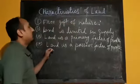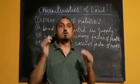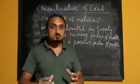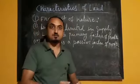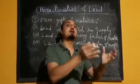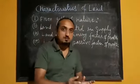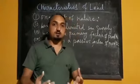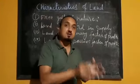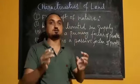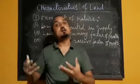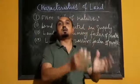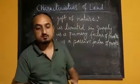The next characteristic: land is a passive factor of production. Why is it called a passive factor of production? Land is passive because land cannot produce by itself. In order to produce anything on that land, at least the services of labor and capital are required. Without the help of labor or machinery, we will not be able to produce on that land.